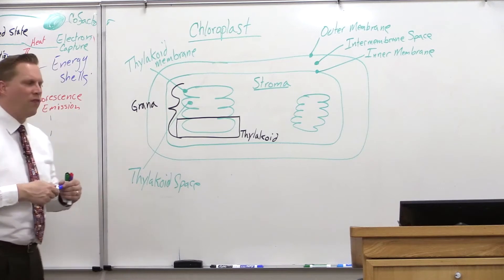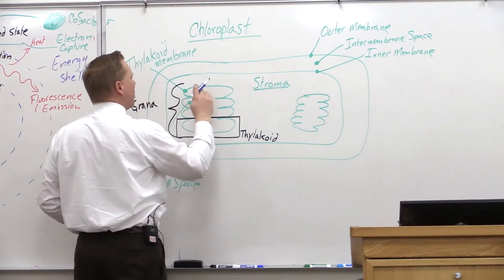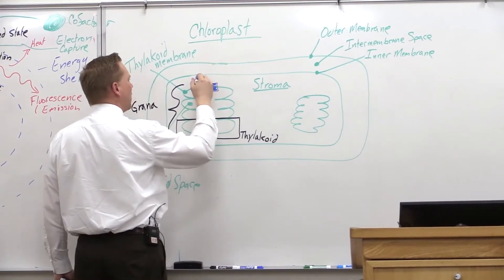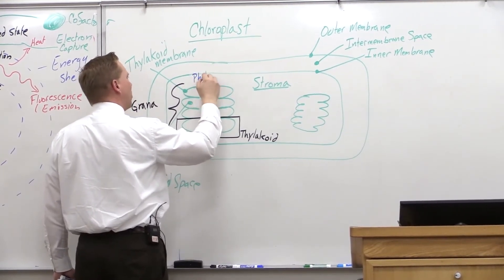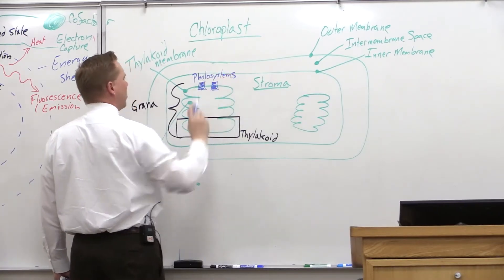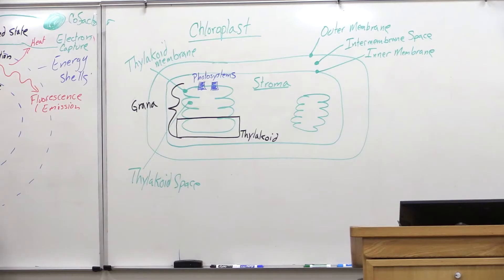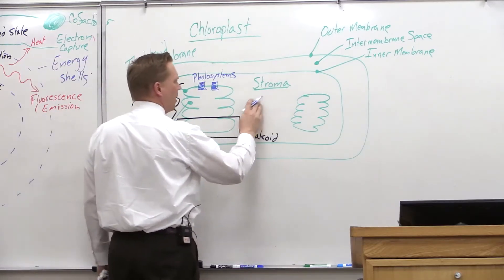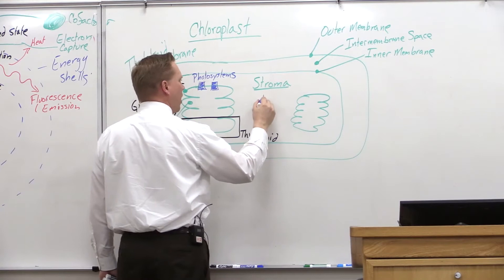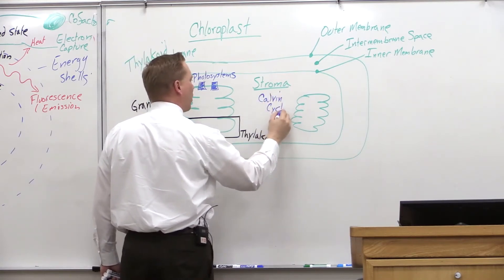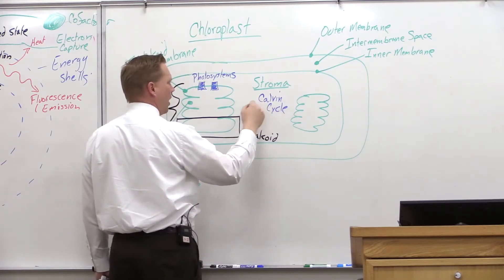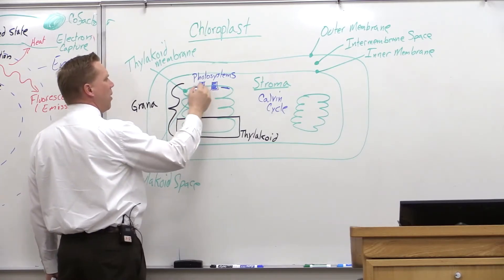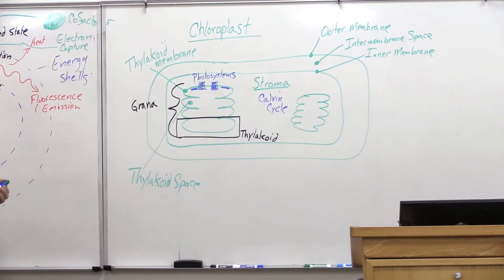A series of proteins embedded in the thylakoid membrane are referred to as photosystems. Those photosystems are going to be the main players in what we call the light reactions of photosynthesis — so that's going to be on the thylakoid membrane. Later on, we're going to be in the stroma — our next lecture will be on the Calvin cycle, which takes place in the stroma. But right now, today, we're focusing on the thylakoid membrane and the photosystems embedded in that membrane.